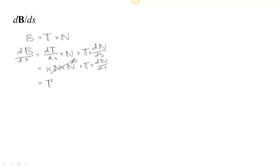So actually, we know that this is T cross dN/ds. Now, we actually know that dN/ds, we know that that is perpendicular to N, right? Because N is a vector whose length is always the same. And we've shown that if a vector's length doesn't change, the only thing that can change is its direction.